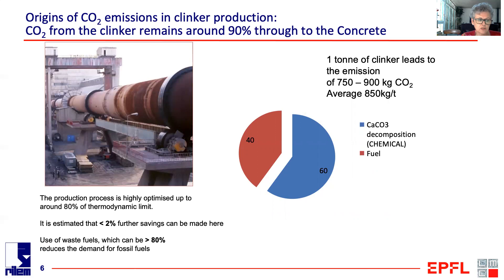Clinker is produced in a cement kiln at a temperature of 1450 degrees. It looks rather old-fashioned technology, but this is in fact highly optimized. Modern state-of-the-art kilns can be up to 80% of the thermodynamic limit, and it's estimated that there are unlikely to be savings of more than 2% when we look at the best available technology. Of course, we can save CO2 by replacing old inefficient cement plants with new ones. Another advantage of this cement kiln is that rather than using fossil fuels, we can use waste materials — waste plastics, for example, can be efficiently and safely disposed of in the cement kiln with their calorific value used usefully.